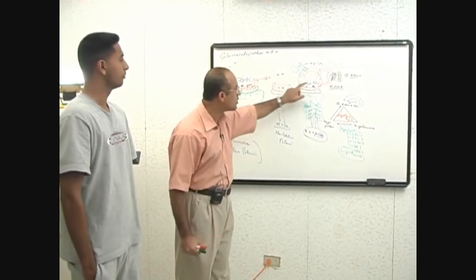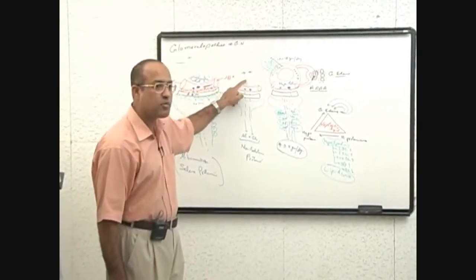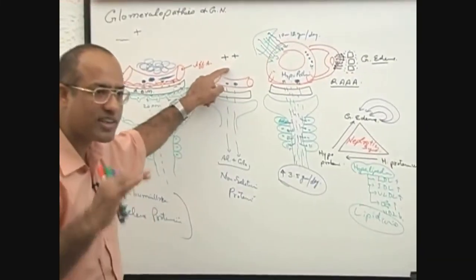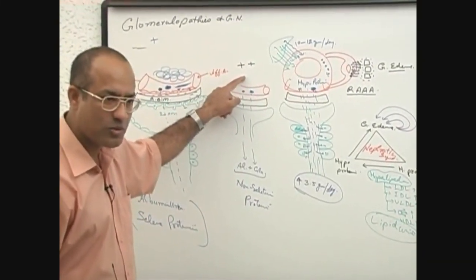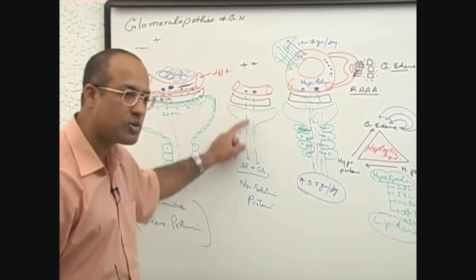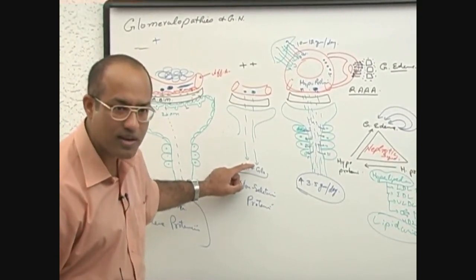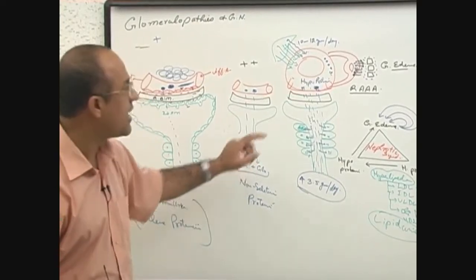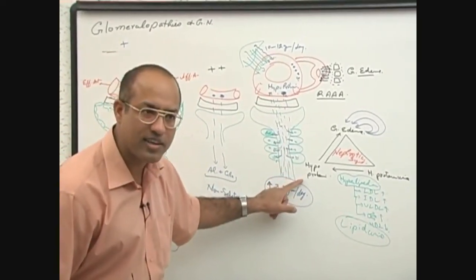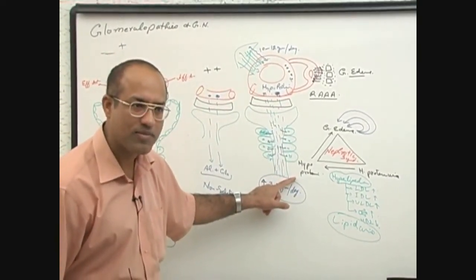So difference in second and third was that second patient has proteinuria which is less than the nephrotic range. So we say what type of proteinuria is this? Sub-nephrotic range proteinuria. Sub-nephrotic range proteinuria. And what is this? Nephrotic range proteinuria.